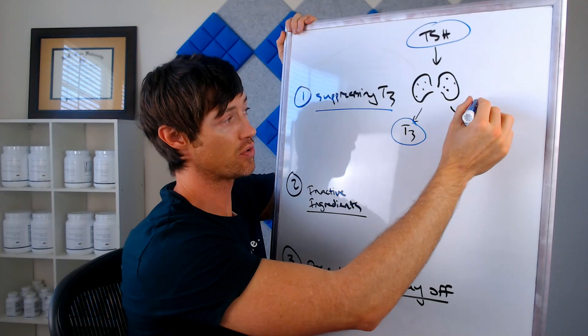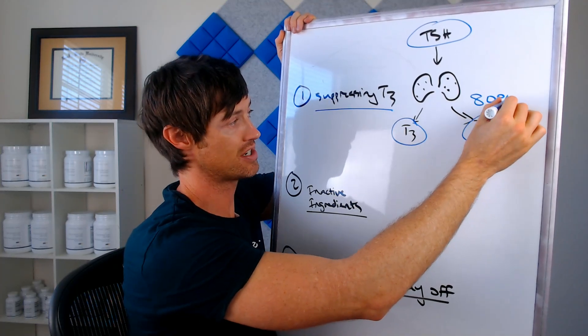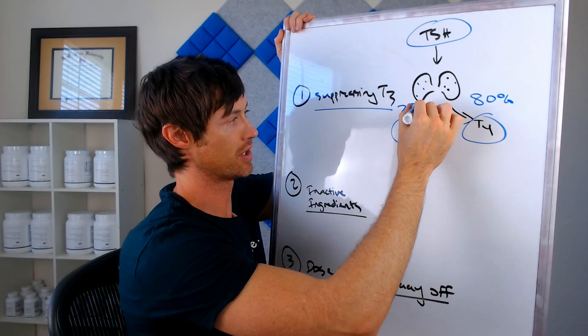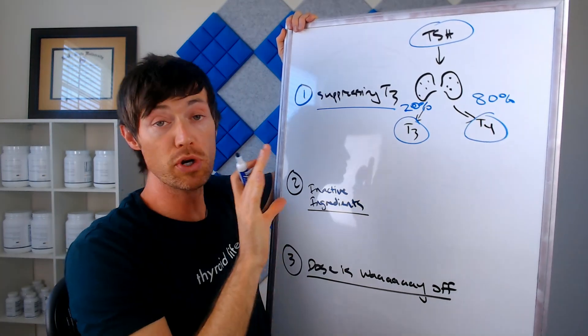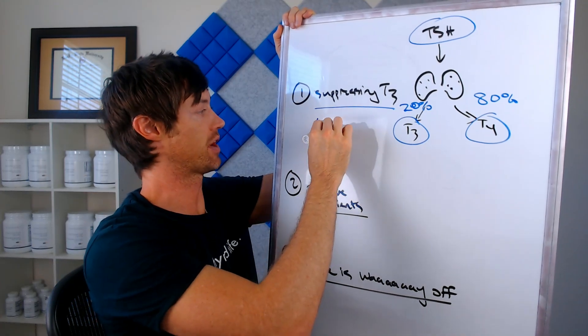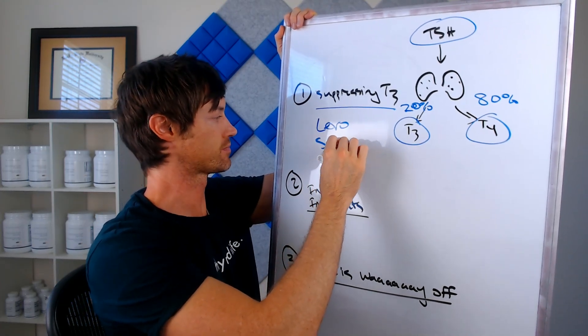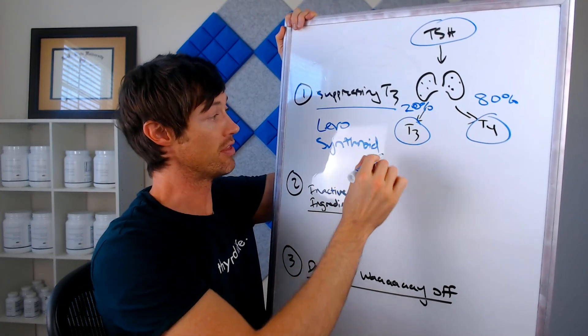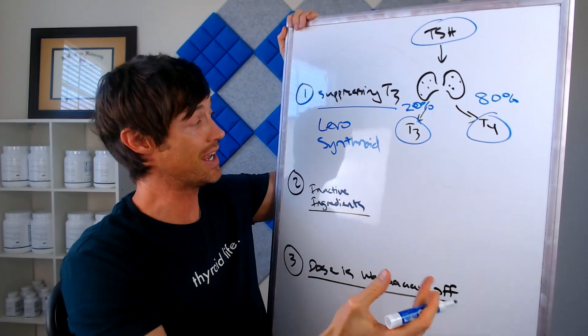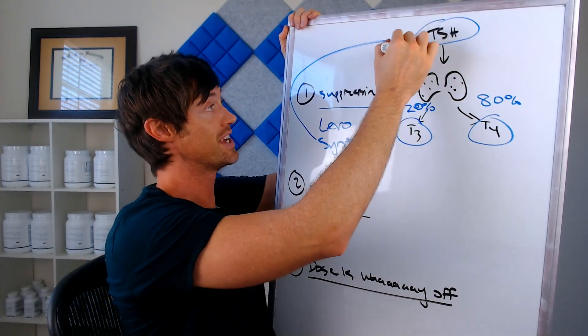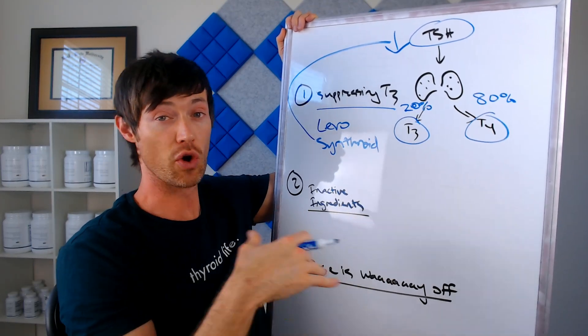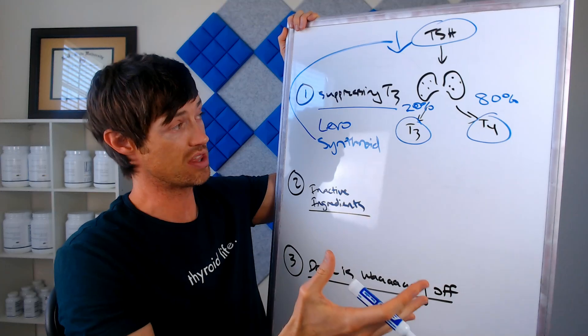Now in the healthy state, your thyroid produces about 80% T4 and about 20% T3. So it's producing both at the same time. But what happens when you introduce thyroid medications like levothyroxine and Synthroid? It changes the ratio of how much thyroid hormone is being produced and manufactured by your body because levothyroxine and Synthroid suppress how much TSH is being produced.